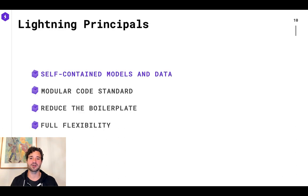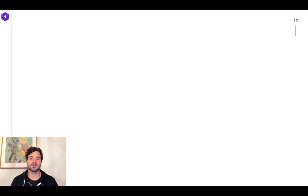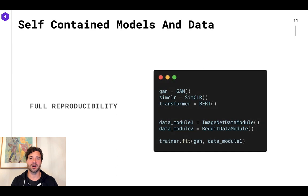Lightning is really designed around four principles. The first one is self-contained models and data. So to show you the value of having self-contained models and data, take a look at this example. I have three models and two different data sets. Because everything's modularized and self-contained, I can mix and match them as much as I want. A good test to see whether your model is self-contained is whether you can drop it into the Lightning Trainer and it'll just work.